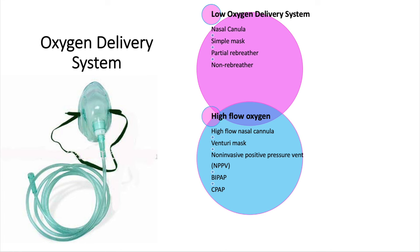Number one is your low oxygen delivery system, and number two is your high flow delivery system. The low level oxygen includes a nasal cannula, simple mask, partial rebreather, and your non-rebreather. Your high flow oxygen includes your high flow nasal cannula, your venturi mask, your non-invasive positive pressure vent (NPPV), your BiPAP, and your CPAP.